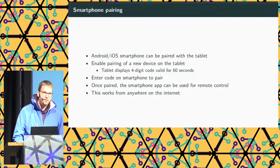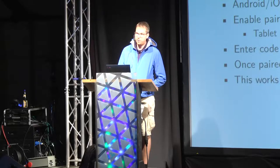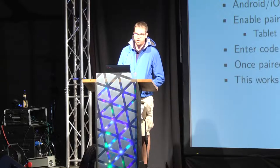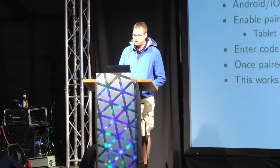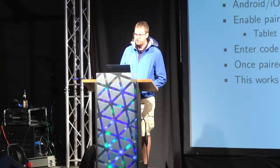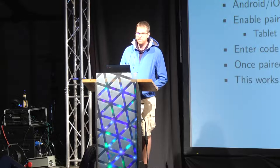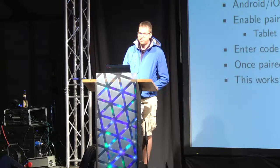The tablet can be used directly, but there's also a feature that lets you pair a smartphone — Android or iOS — to the tablet. When you want to pair it, you click a button on the tablet, it generates a four-digit code, and you have 60 seconds to enter that same code on the smartphone app. Once paired, you can control things inside the apartment from anywhere on the Internet.